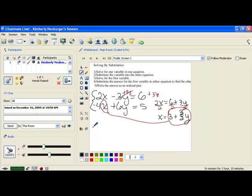So we have negative 4 times 3 plus 3 halves y plus 6y equals 5.